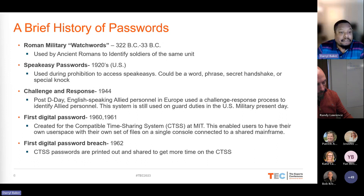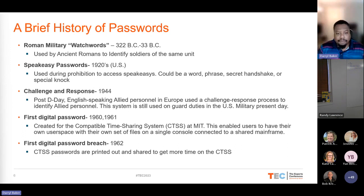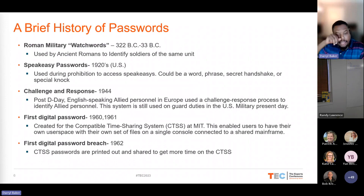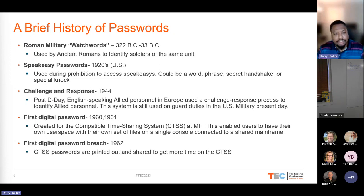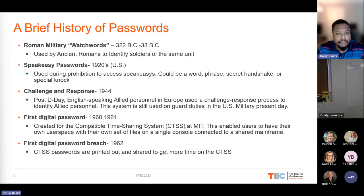It's not really until 1944, post D-Day, that challenge-and-response authentication emerged — due to the need to communicate with allied personnel and prevent messages from being intercepted. With a speakeasy, when you give the password you prove you're supposed to be there, but there's nothing that guarantees the person you gave it to is actually part of the speakeasy. They could just turn around and replay that password to get in themselves.